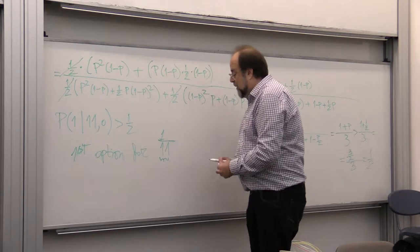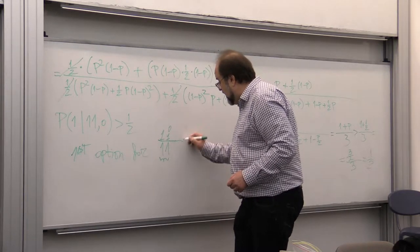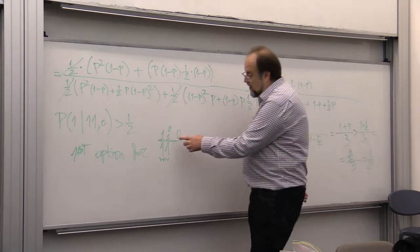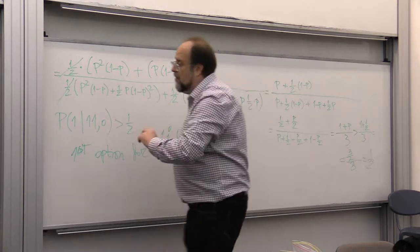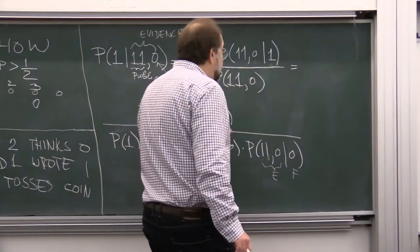Right, but for this guy there are two possibilities, one and zero, and we know that the third guy sees a zero. So then this probability, the probability of one, one, zero, given one, will be equal the first probability.